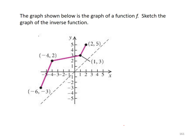The first point is negative 6, negative 3. The second point is negative 4, 2. The third point is, actually, let me say that again. Negative 6, negative 3 is the first point. Negative 4, 2 is the second point. 1, 3 is the third point. And 2, 5 is the fourth point. And it's connected by line segments.